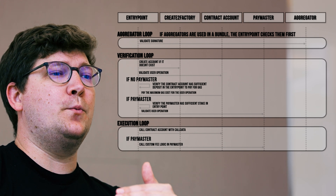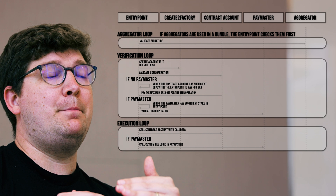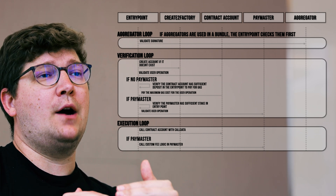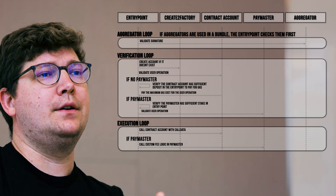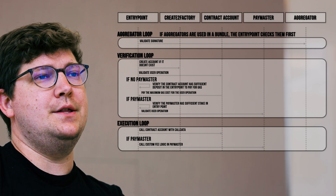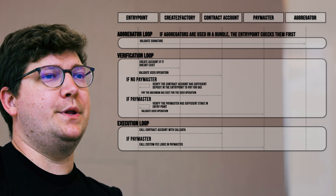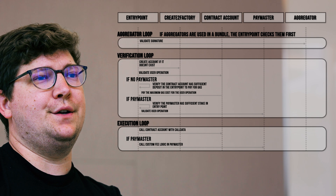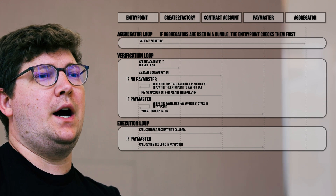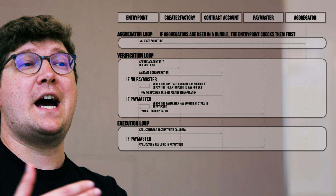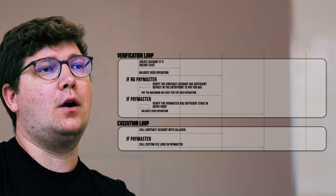The execution loop is where the entry point sends — basically where the smart account executes the call data that is included in the user operation struct. The call data is effectively the data that specifies what the transaction or transactions going to happen on chain are.